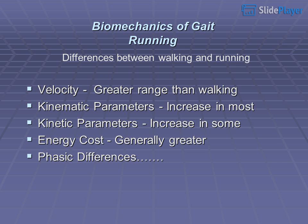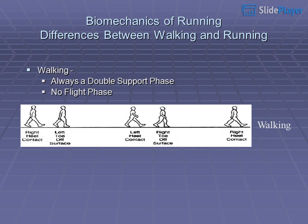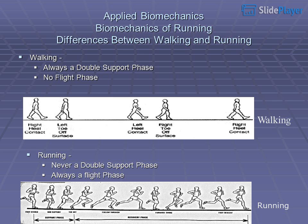Differences between walking and running: velocity is greater in running; kinematic parameters increase in most respects; kinetic parameters increase in some; energy cost is generally greater. In walking, there is always a double support phase and no flight phase. In running, there is never a double support phase — there is always a flight phase.